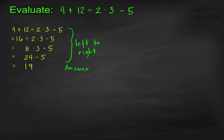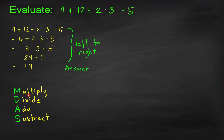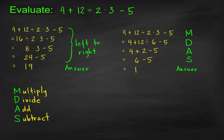Other people probably know the MDAS rule. MDAS stands for Multiplication, Division, Addition, and Subtraction. But some might think we need to multiply first, then divide, then add, then subtract, and they will get this: 2 times 3 is equal to 6, followed by 12 divided by 6 is 2, followed by 4 plus 2 equals 6, and then 6 minus 5 equals 1.